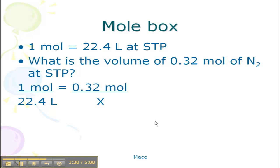We set up our proportion the same way we did all of our other mole conversions. 0.32 moles is what we're looking for, or is our given. We put that over X, we cross multiply, and we get 7.168 liters.